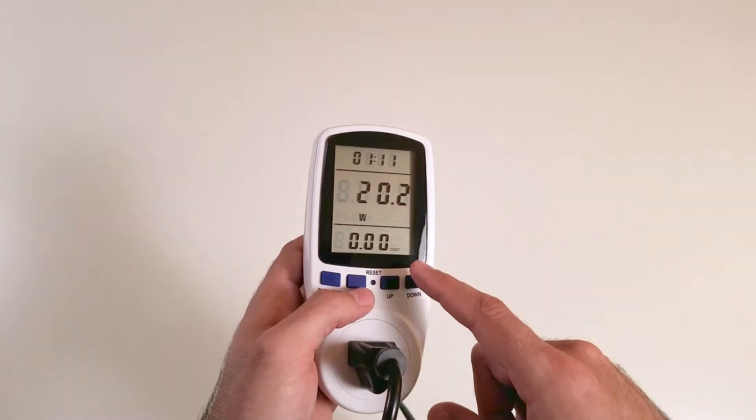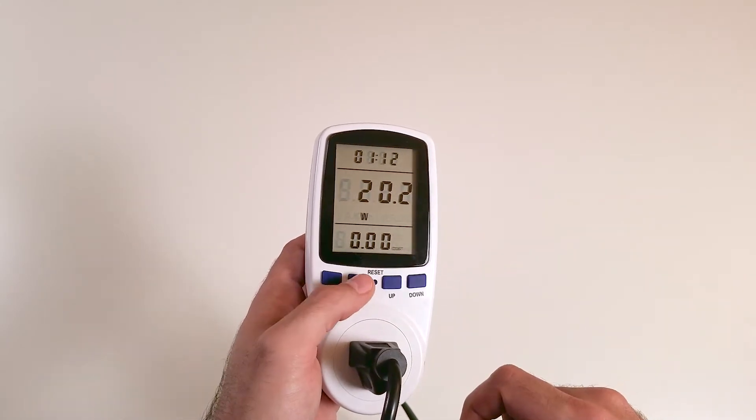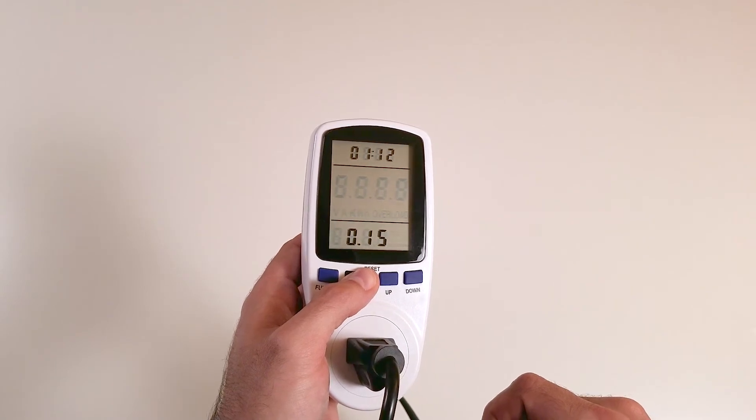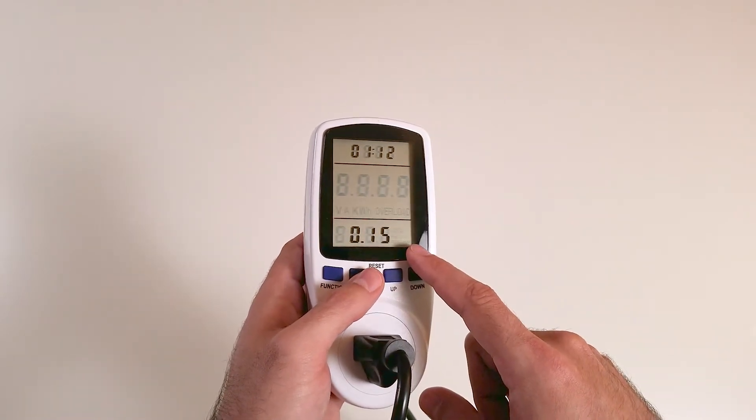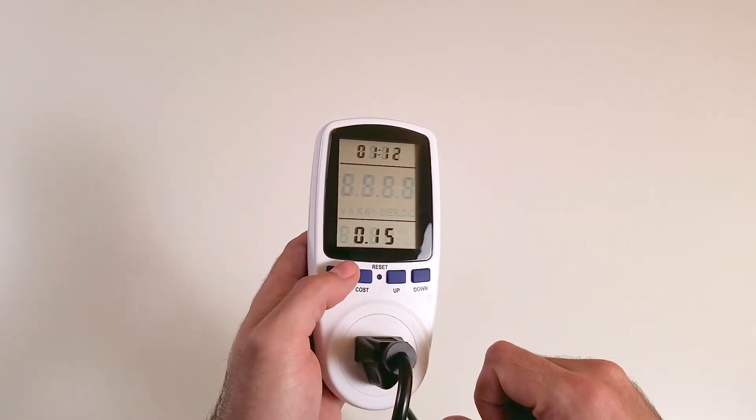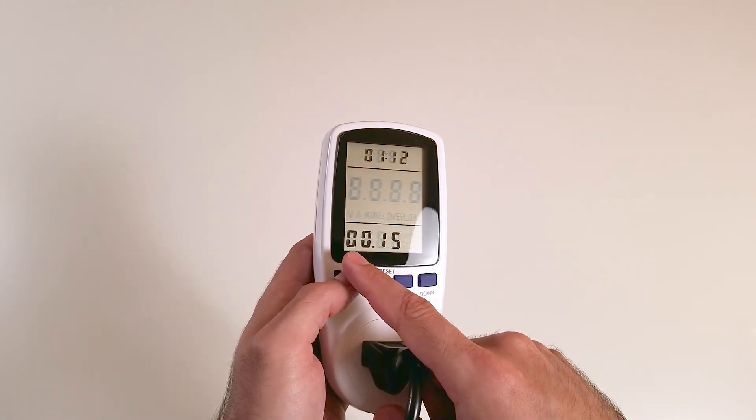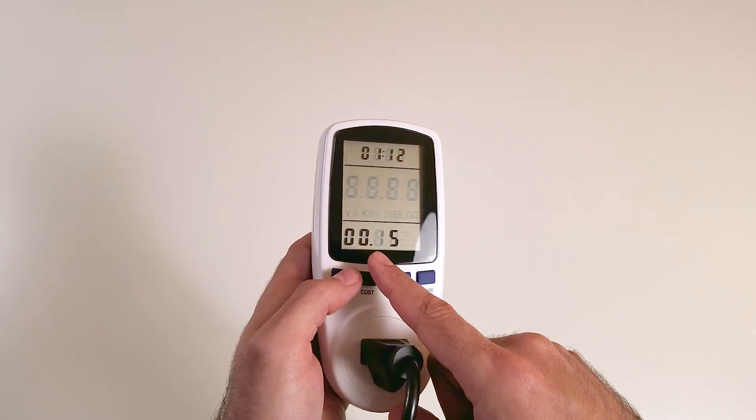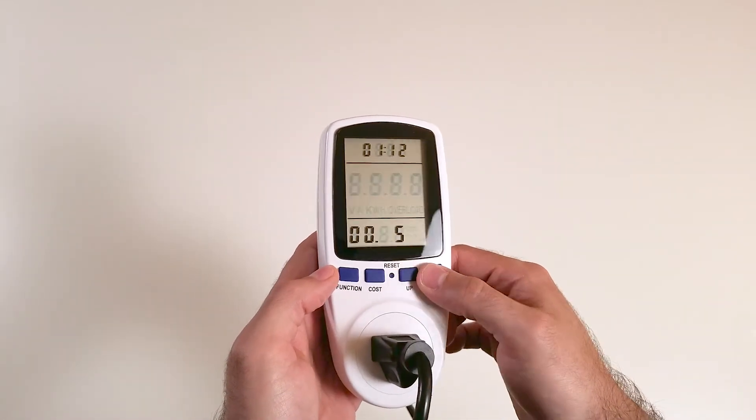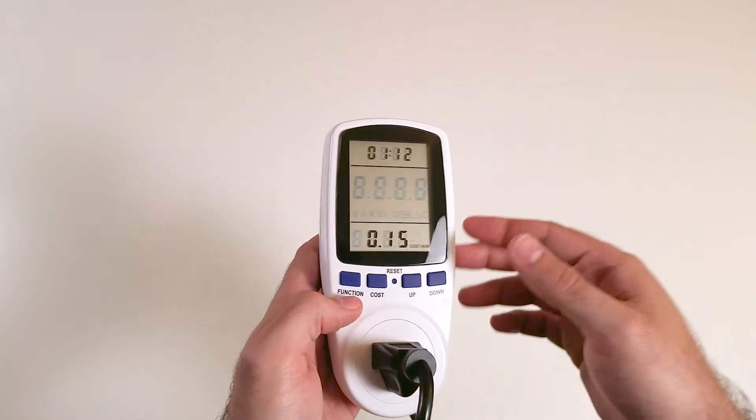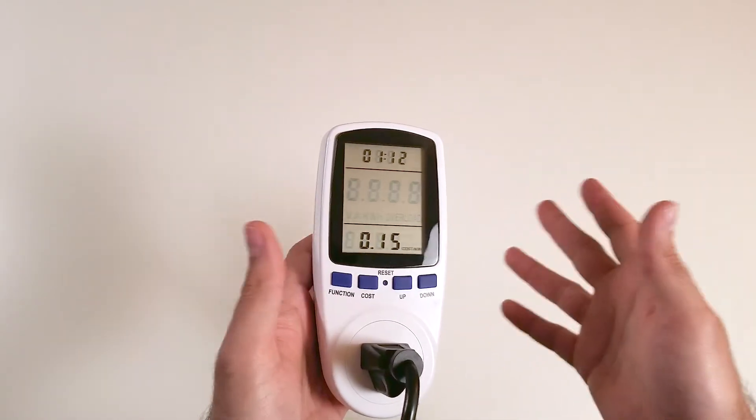Let's say you want to input the cost. You press this button, cost. And then you press again, hold for three seconds. This will blink. All you have to do is press the function. It's at the first digit. The second digit. And here you can press up and down. Once you're done, just press cost. And that's it.